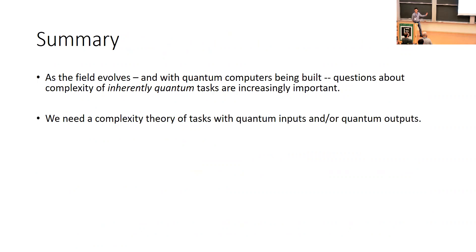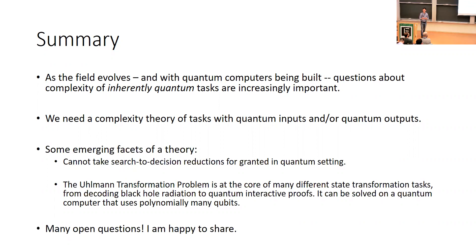In summary: as quantum complexity theory evolves and quantum computers are being built, questions about the complexity of inherently quantum tasks are increasingly important. We need a complexity theory to talk about and study these tasks. In this talk I gave some emerging facets of what this theory might look like — the existence or non-existence of search-to-decision reductions, and the Uhlmann transformation problem, which seems core to many experimental and physics tasks. There are many open questions, and thank you for listening.